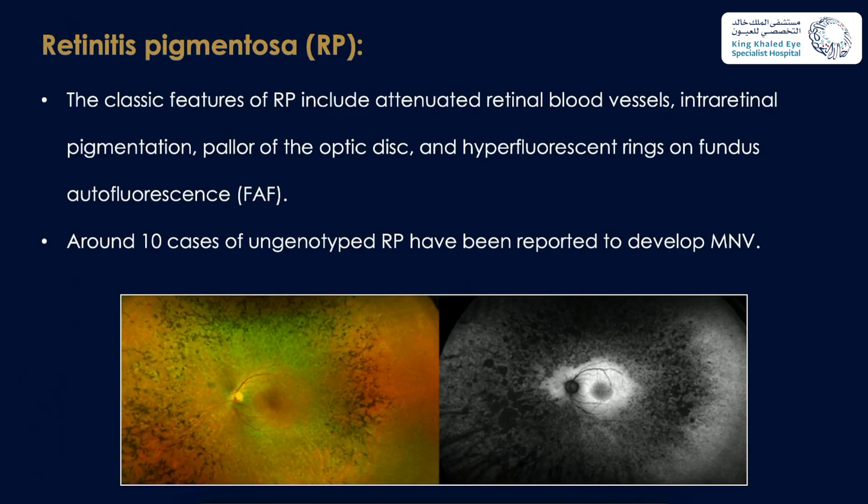Retinitis pigmentosa: the classic features include attenuated retinal blood vessels, bone-spicule retinal pigmentation, pallor of the optic disc, and hyperautofluorescent rings on fundus autofluorescence. Around ten cases of various genotypes of RP have been reported to develop macular neovascularization.